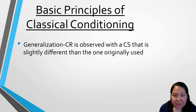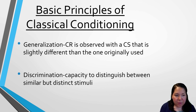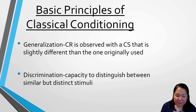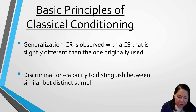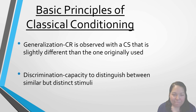Discrimination is where Spike has the capacity to distinguish between similar but distinct stimuli — he is able to discriminate a bell from a whistle. That wraps up the first part of Chapter 7.